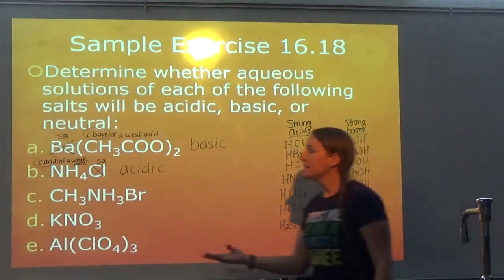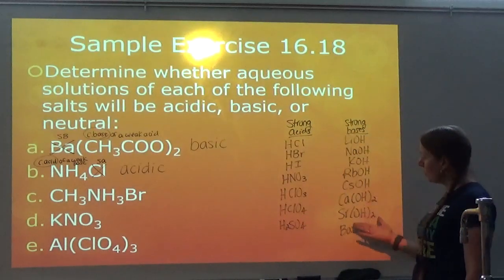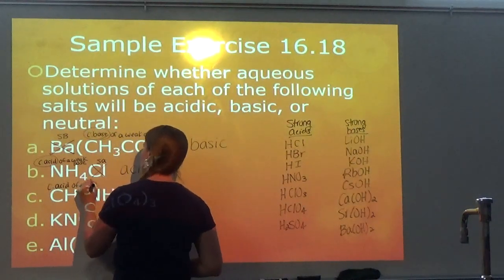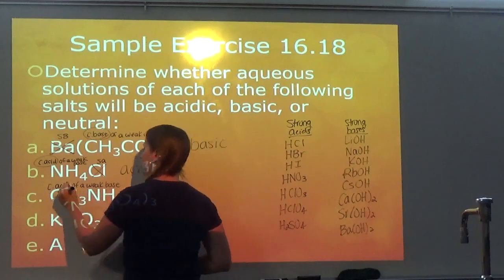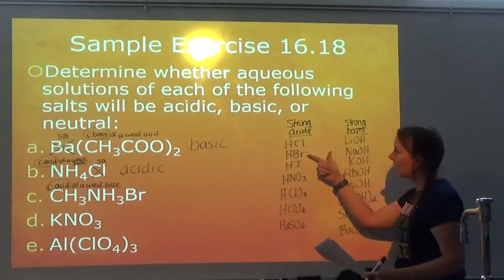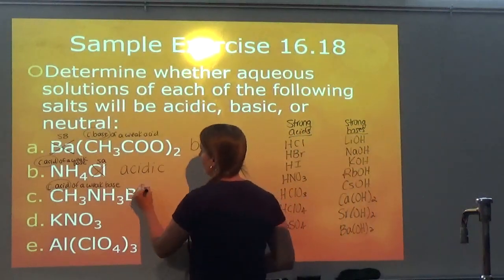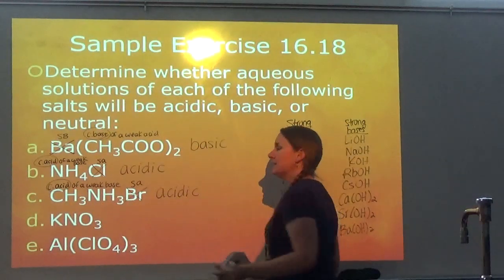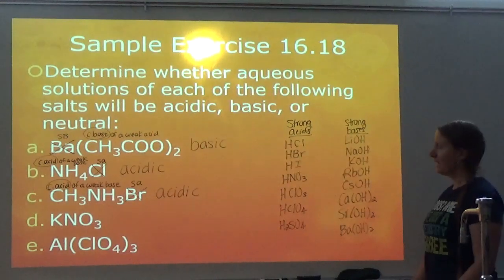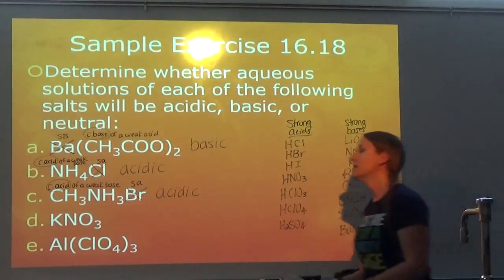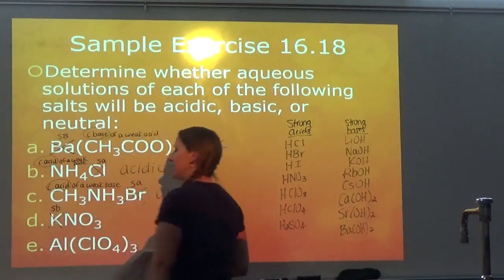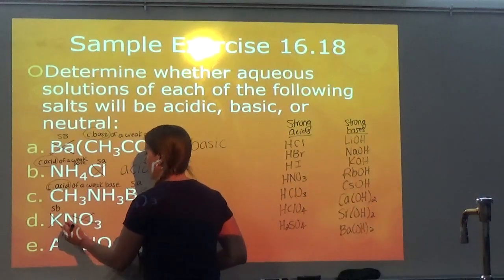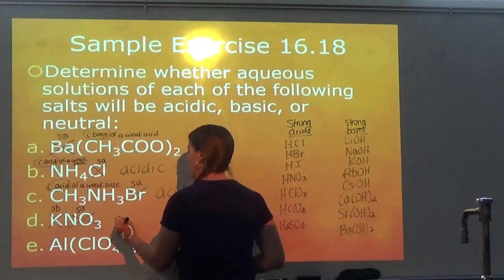For CH₃NH₃Br: CH₃NH₃⁺ is not on my strong bases list, so it is the conjugate acid of a weak base. Br⁻ comes from a strong acid, so it does not affect. Since I have a conjugate acid floating around, the solution is acidic. For KNO₃: K comes from a strong base so it does not affect the pH, and NO₃⁻ comes from a strong acid so it also does not affect pH — KNO₃ would stay neutral.